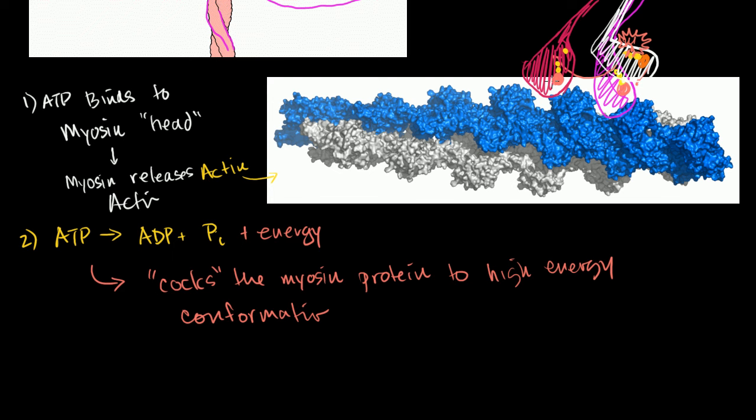Now, we're ready to, we're in a high energy state. In step three, the phosphate is released from myosin. That's step three right there. That's a phosphate group being released.